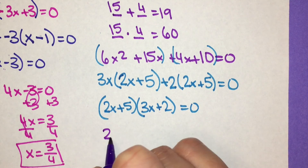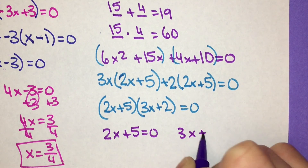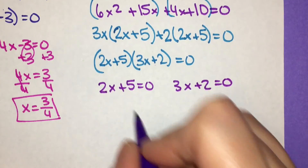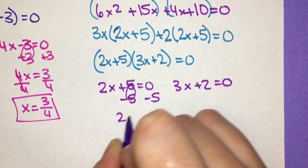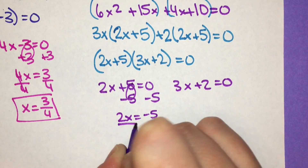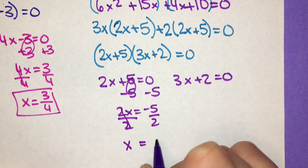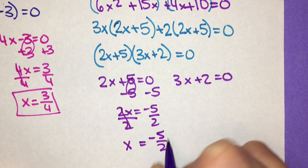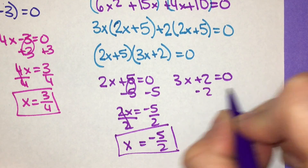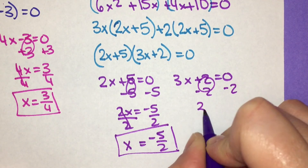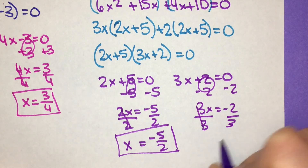I solve for x: 2x plus 5 equals 0 and 3x plus 2 equals 0. I subtract 5 on both sides to get 2x equals negative 5, then divide both sides by 2 to get x equals negative 5 halves. I subtract 2 on both sides to get 3x equals negative 2, then divide both sides by 3 to get x equals negative 2 thirds.